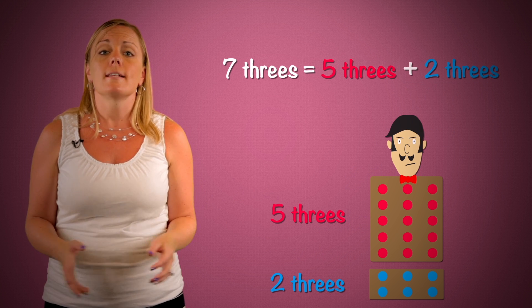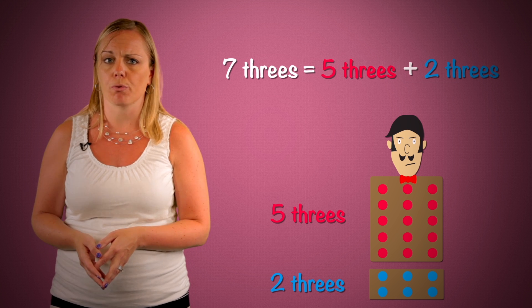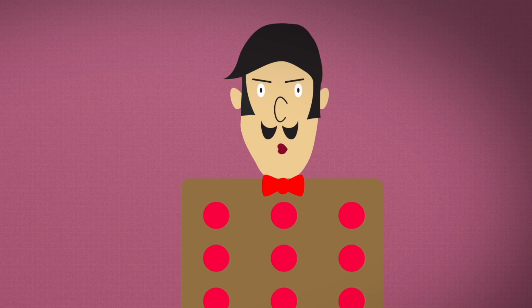So, seven threes is equal to five threes plus two threes. Yeah, yeah. Which means seven times three is the same as five times three plus two times three. Can I go now?